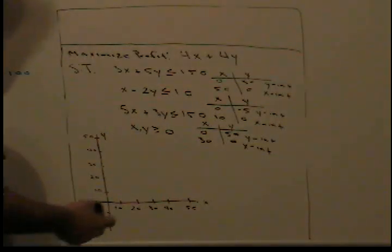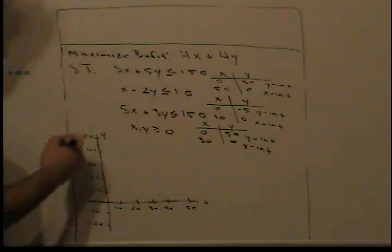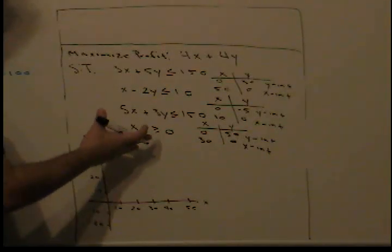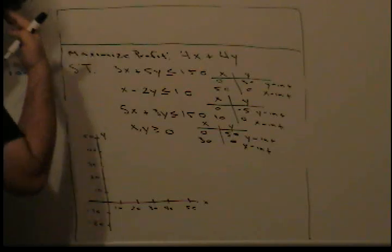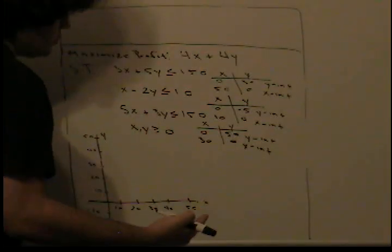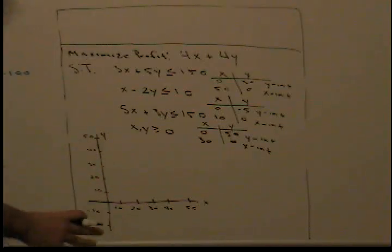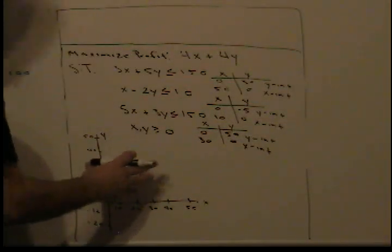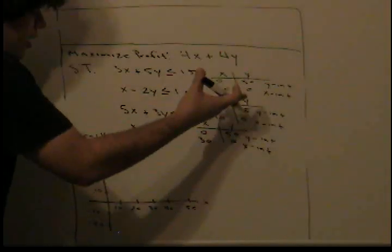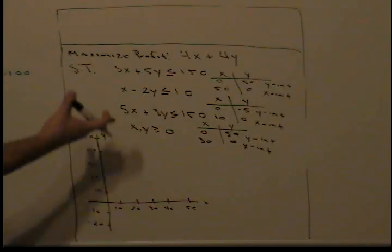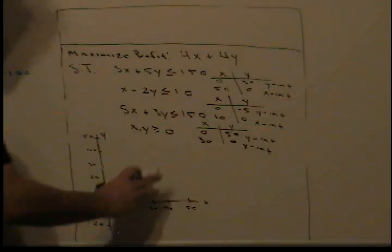This is also a very important constraint called the non-negativity constraint, which applies to all linear programming problems. It means x ≥ 0 and y ≥ 0 — like a horizontal and vertical boundary at the origin. Our feasible region is always in the first quadrant because we're maximizing profit, so we don't want negative x or y values.